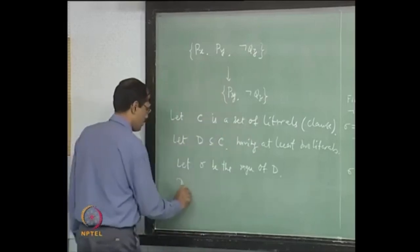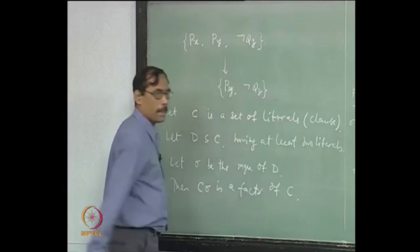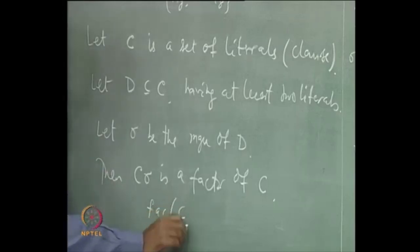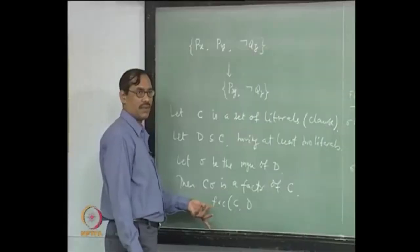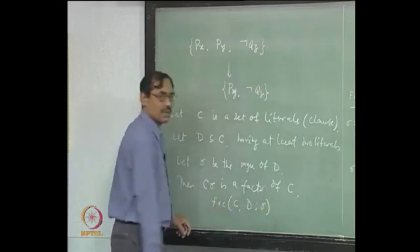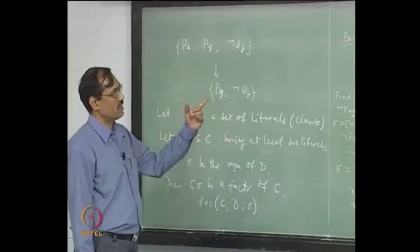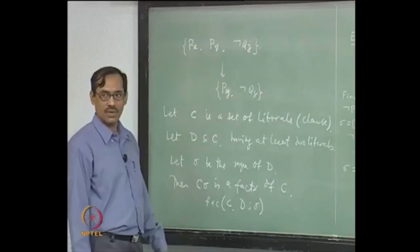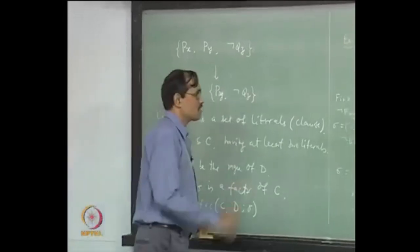Then C sigma is a factor of C. Sometimes we write it as factor of C with respect to this subset D. That is enough, because the MGU will be fixed by D itself if they are unified. Sometimes we also keep C sigma. What this suggests is: not only deduce the resolvent of two clauses on two literals, but along with that you have another rule — deduce also the factor. If there is a set of literals, deduce a factor of it.